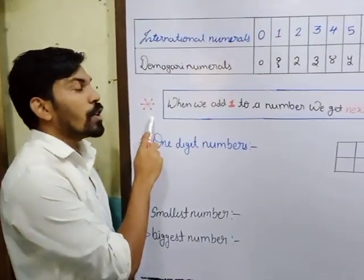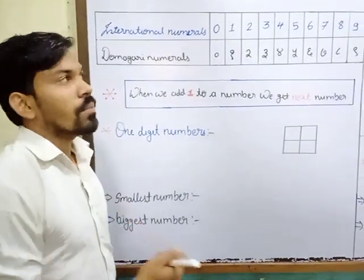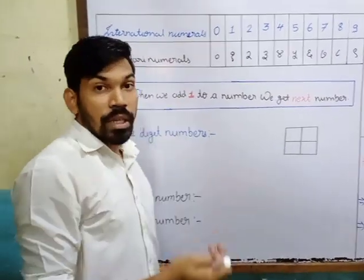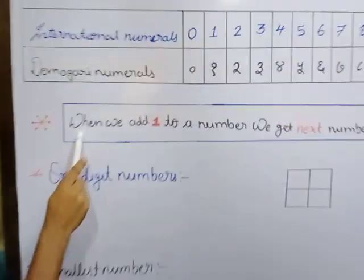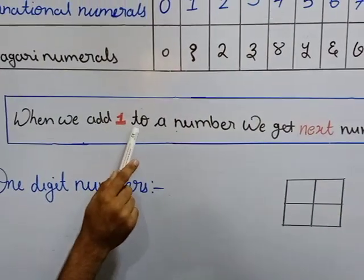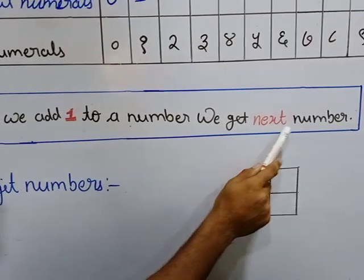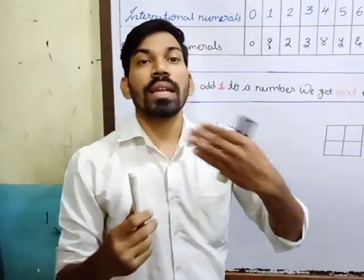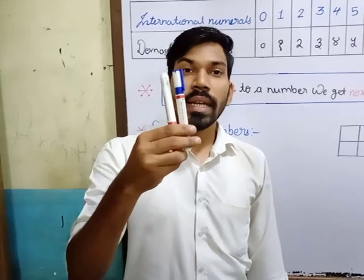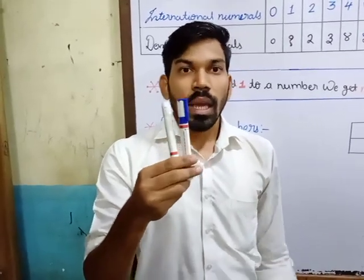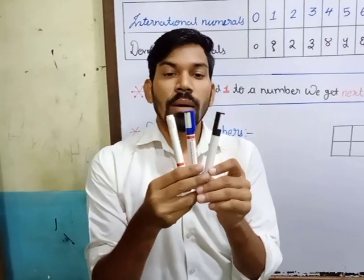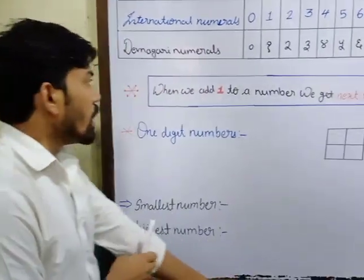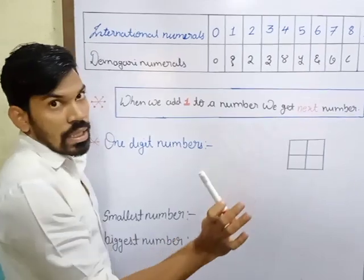Now, we have the specific rule: how can we get the next number? How can we say that after one comes two, after two comes three — where does it come from? There is a rule: when we add 1 to a number, we get the next number. For example, if I have 2 markers and I add 1, it will become 1, 2, 3. So, when we add 1 to any number, we get the next number.